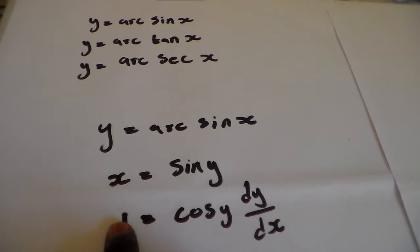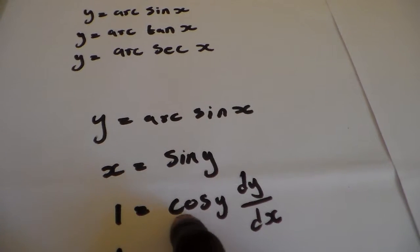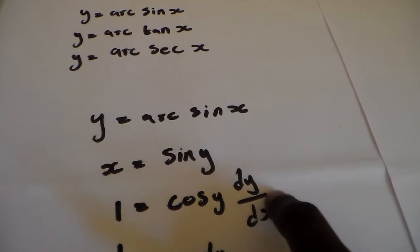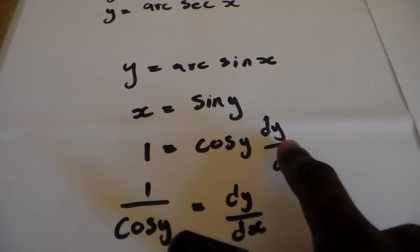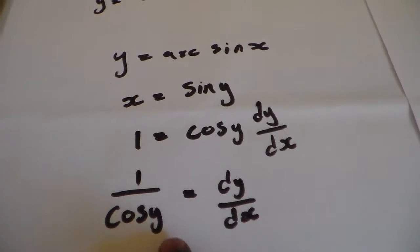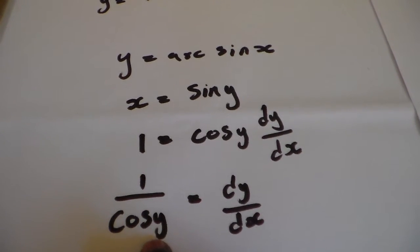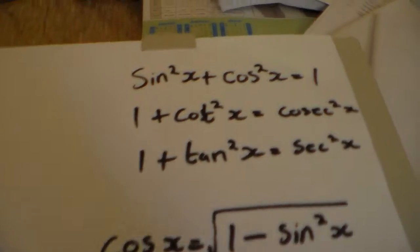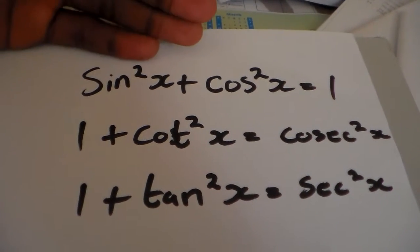We're going to have x is equal to sin y, therefore we derive both sides. The derivative of x is equal to 1, and then the derivative of sin y is equal to cos y. Wherever we're deriving y, we add dy/dx. We divide both sides and we get 1 over cos y.